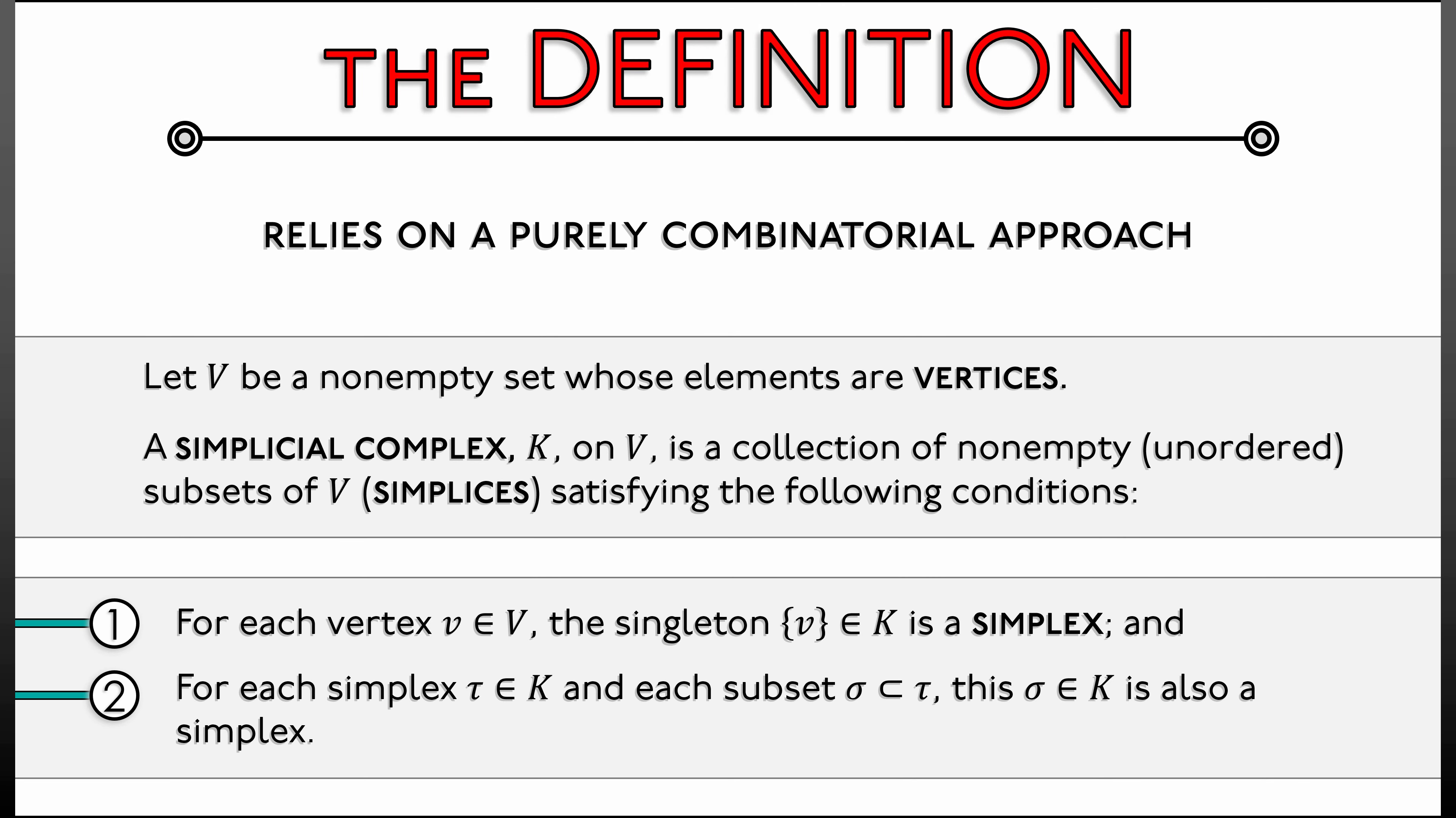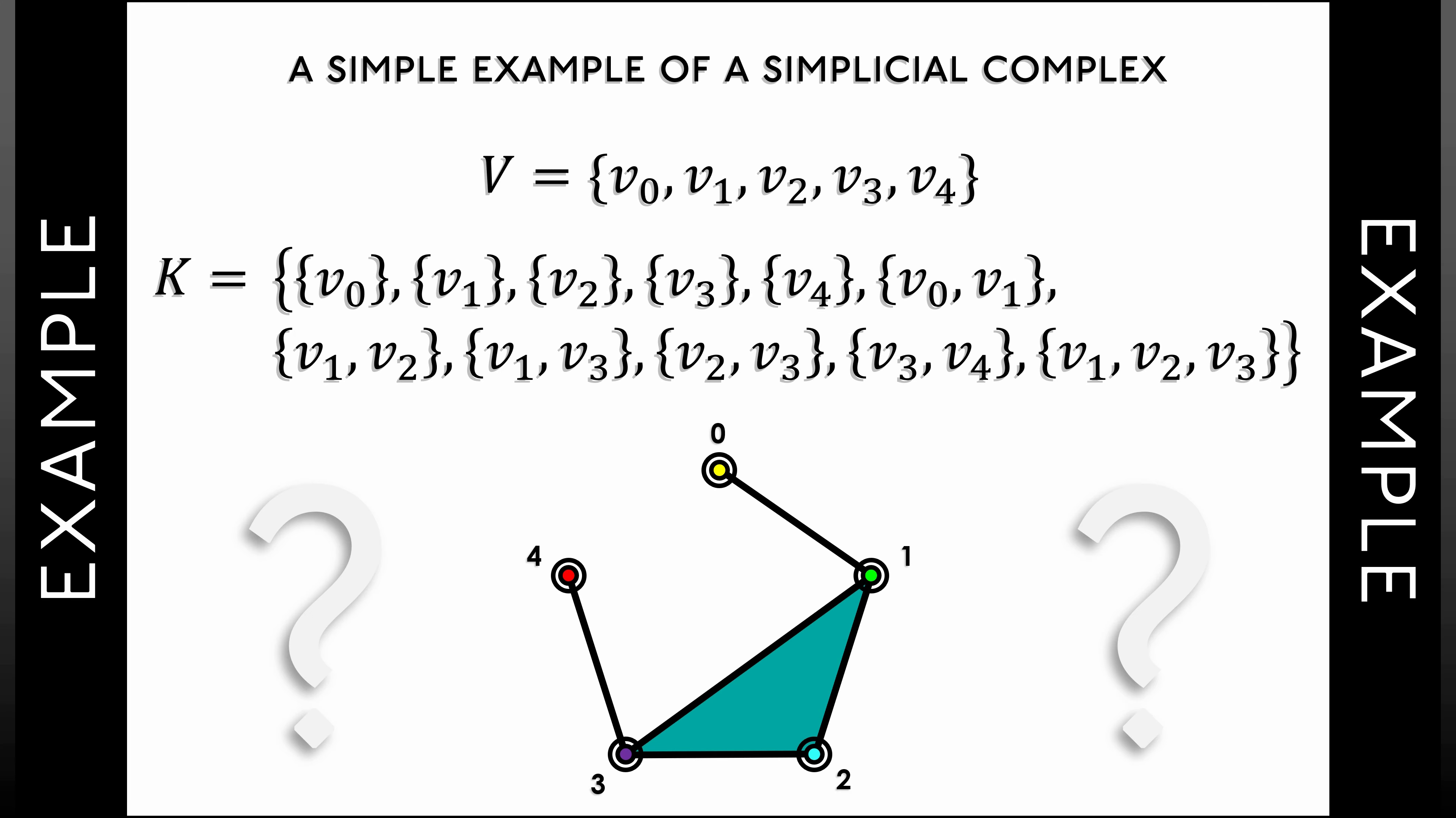So let's think, what was that? All right, we have to have all of the vertices represented. Check. Whenever we have a simplex, then all subsets of that simplex have to be represented. For edges, that's not a problem. For this one two-simplex, V1, V2, V3. Ah, yes. We can see that there are those three edges that represent the non-trivial subsets.